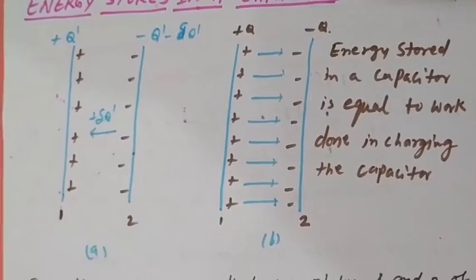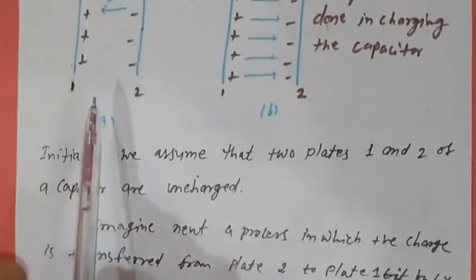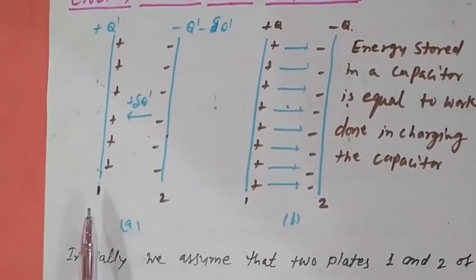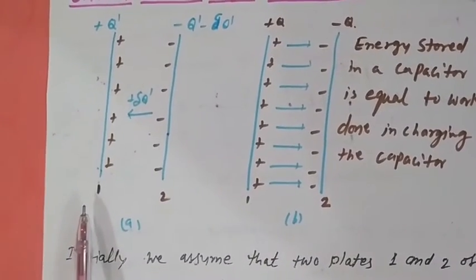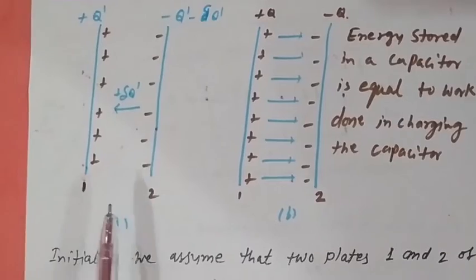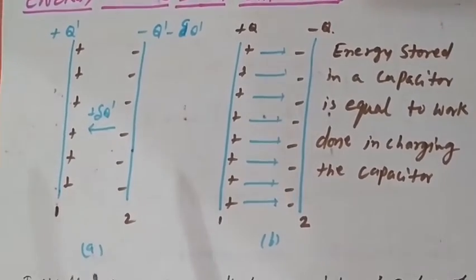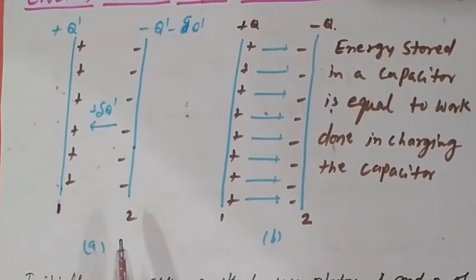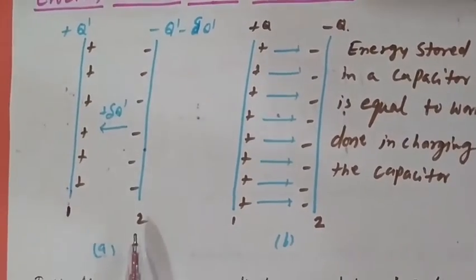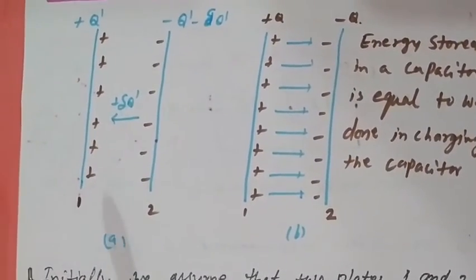Initially we assume that the two plates 1 and 2 of a capacitor are uncharged — there is no charge on plate 1 and 2. Now we start the process of charging. We transfer positive charge from plate 2 to plate 1.